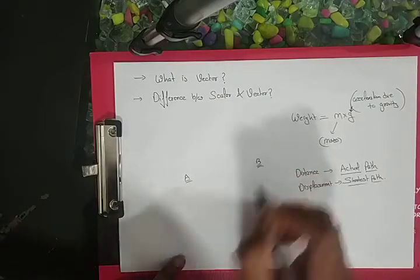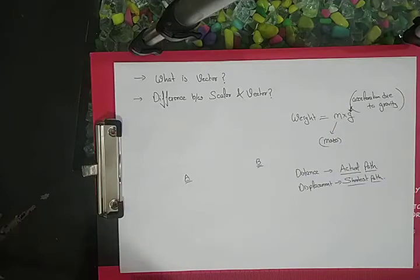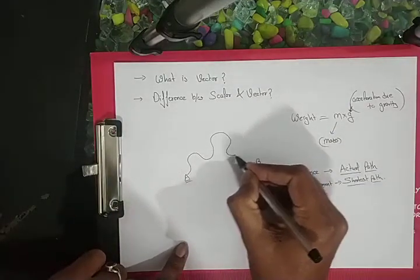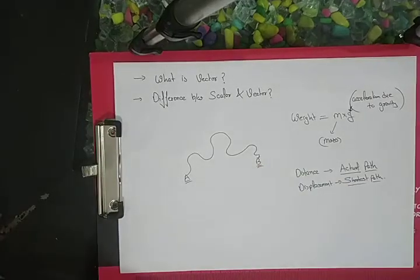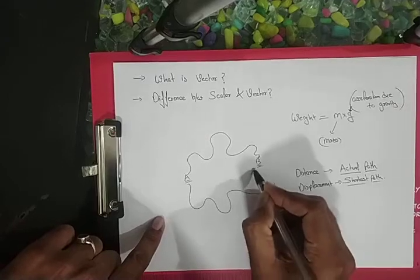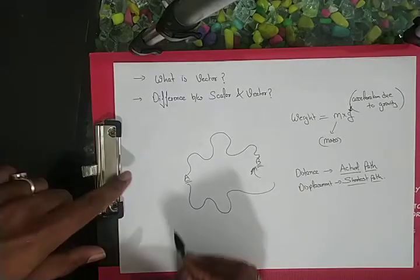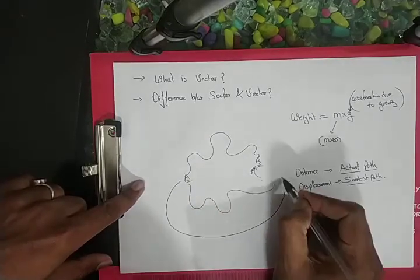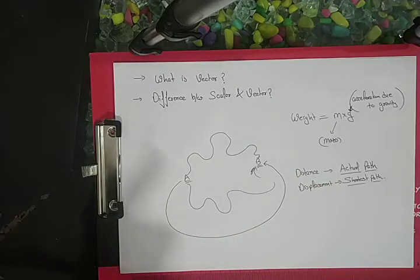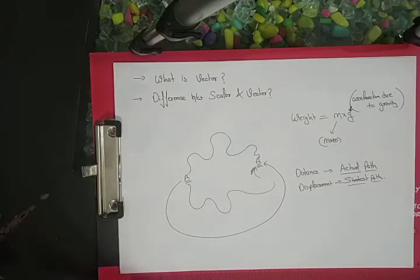Let's say we have a point A and we have a point B. I want to go from A to B through some random path - like I'm going this way, this way, or I'm going this way. So I'm going through any path, any direction can be there.